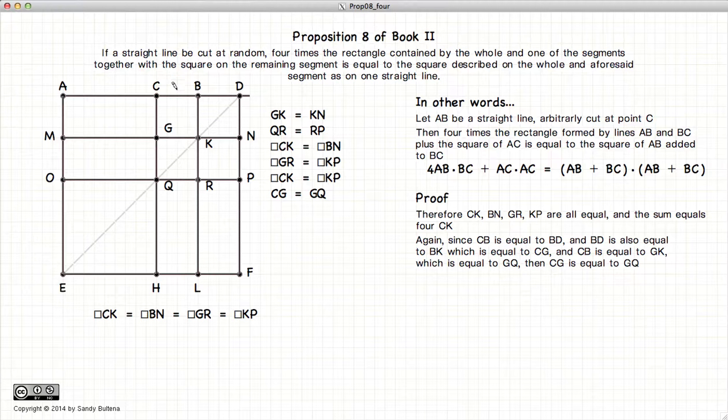Again, since CB is equal to BD, and GK is equal to KN, we've already demonstrated in a prior proposition, I think it was Proposition 4, that CB will be equal to CG, and GK will be equal to GQ, which gives us that CG is equal to GQ. By the same argument, we can also demonstrate that QR is equal to RP.